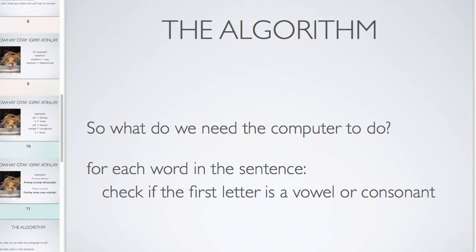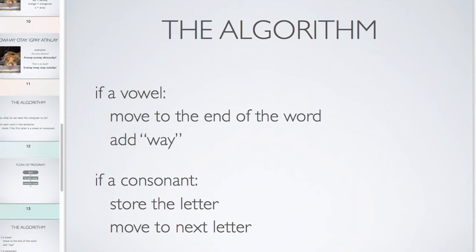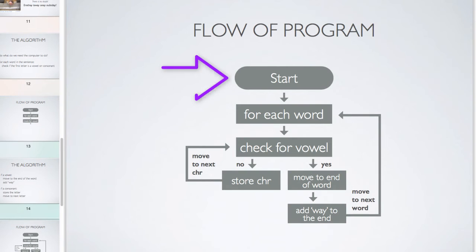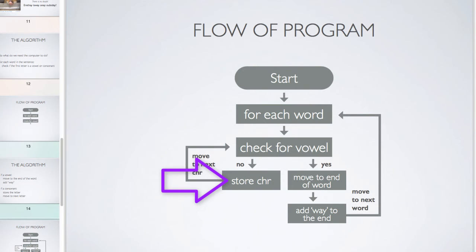Explaining to a human how to do it is pretty easy because we can talk about words and moving things, but how do we teach a computer to do it? For each word in the sentence, we're going to use some sort of loop. Check if the first letter is a vowel or a consonant. If it's a vowel, move to the end of the word and add 'way'. If it's a consonant, store the letter and move to the next letter, because we need to keep checking until we get to the first vowel and then do the transposition. We keep doing that until it's a yes.